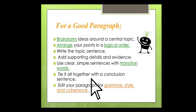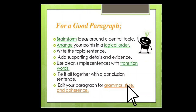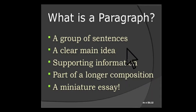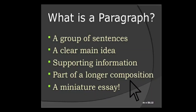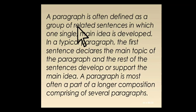Tie it all together with a conclusion sentence — add a conclusive sentence at the end of the paragraph. Then edit your paragraph for grammar, style, and coherence. Check that you haven't made any grammatical mistakes; review the format, style, body, topic, and conclusion. Ensure coherence — that related ideas match each other. A paragraph is a group of sentences with one clear idea, with supporting sentences, and it is a part of a longer composition — a miniature essay.